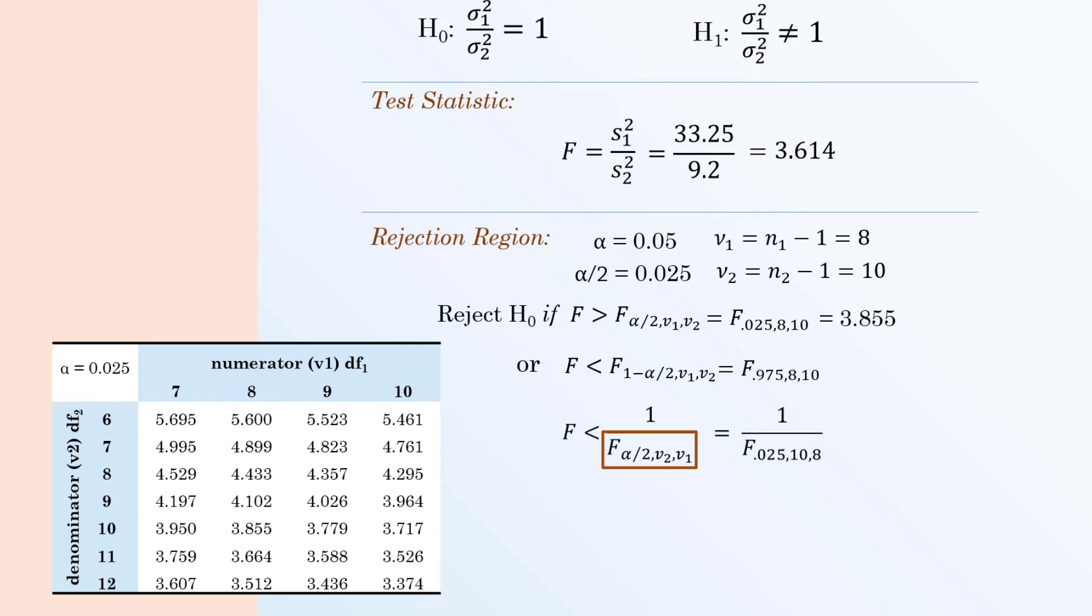you can use 1 over F alpha over 2 and switch the degrees of freedom. The denominator is 4.295 and the left-tailed critical value is 0.233.